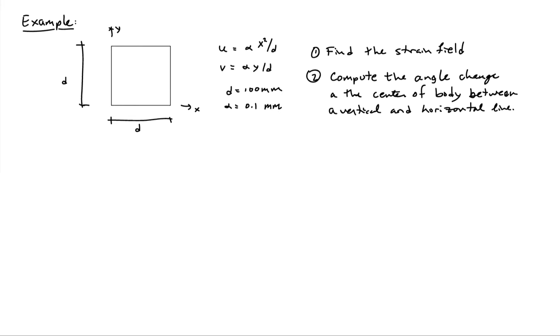We have a given displacement field for this body. We have motion in the x direction which is alpha x squared over d, and motion in the y direction which is alpha y over d. Alpha equals 0.1 millimeters. So this is my setup here.